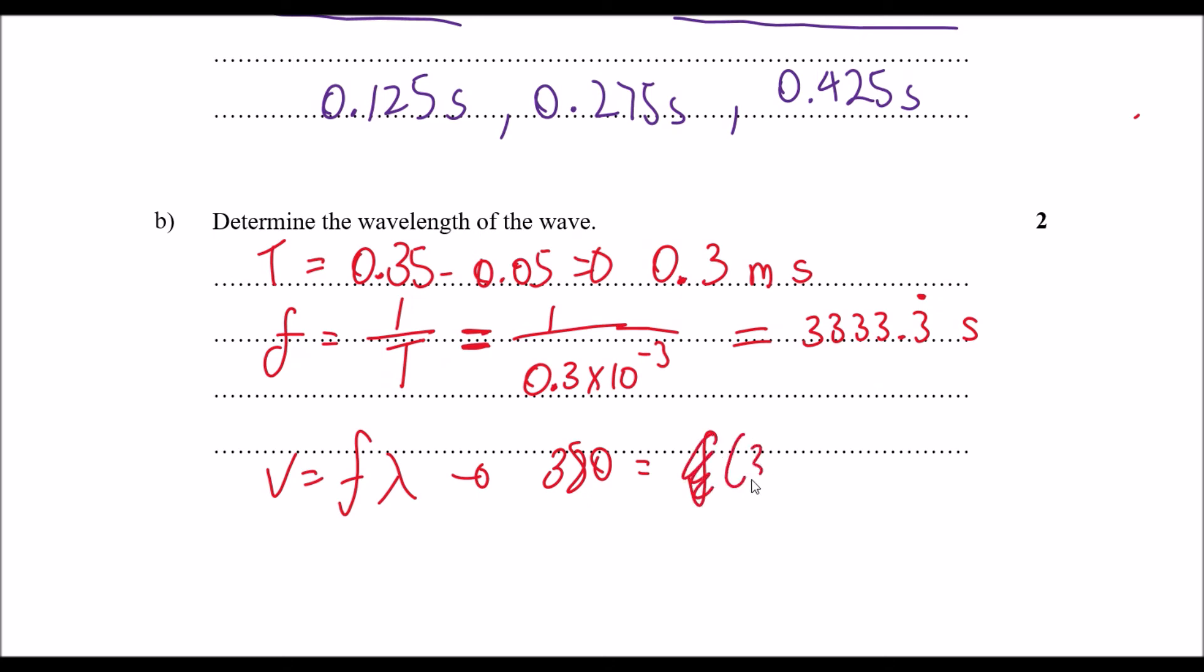Frequency, that's given to us 3333.3 repeater as you know, and then wavelength. Wavelength is therefore equal to 380 divided by 3333.3 repeater, and that gives you exactly 0.114 meters.